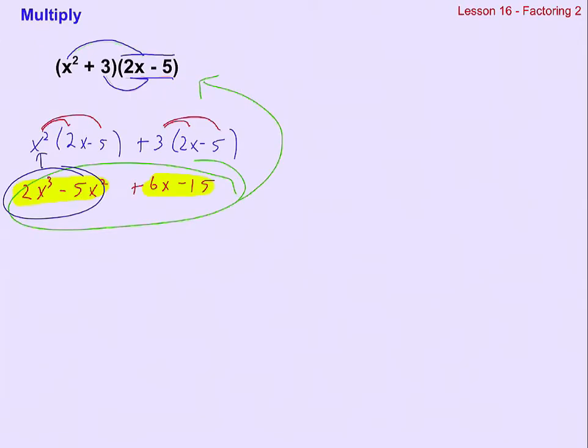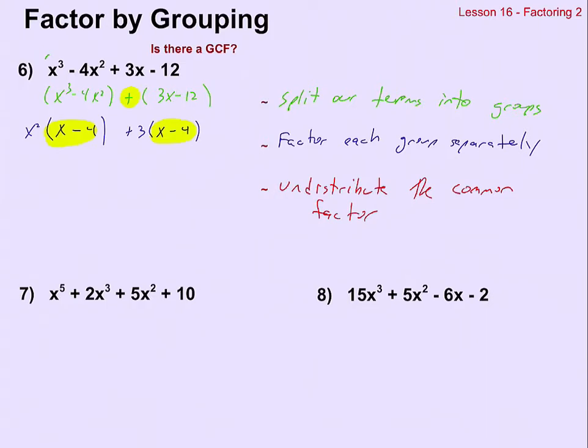We distributed the x squared to the 2x minus 5. We distributed the 3 to the 2x minus 5. That meant that the 2x minus 5 itself was a common factor. So we're just undoing that now. We're going to undistribute the x minus 4. We're going to pull the x minus 4 away from the x squared and pull it away from the 3, and that leaves us with our factors.